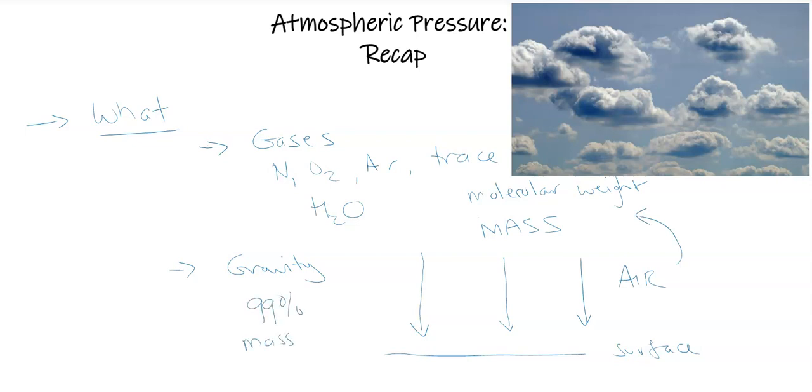Around 99% of all the mass, or the air molecules, in our atmosphere is within the first from the surface, which is zero kilometers, up to around 50 kilometers, which is our stratopause. Basically meaning that the troposphere and the stratosphere contain pretty much all of the atmospheric gases and the mass.